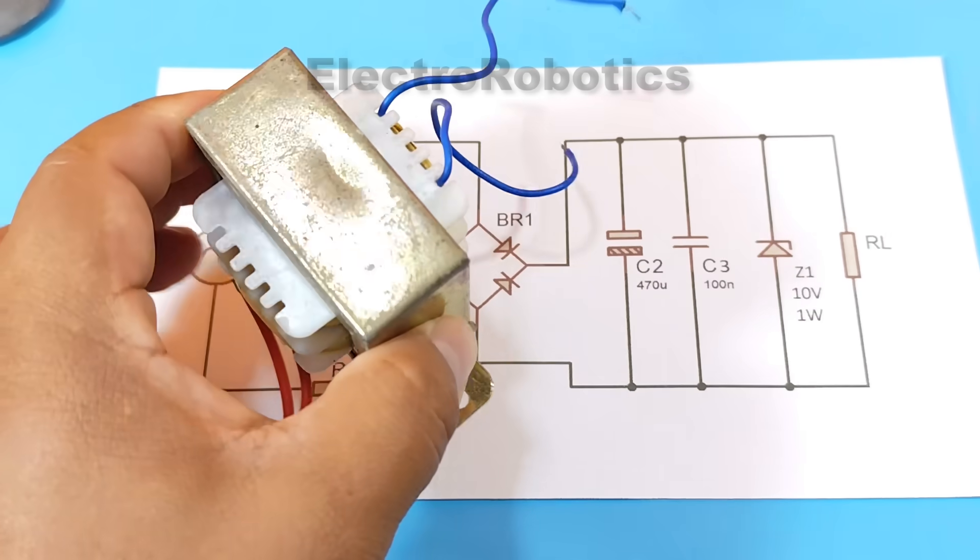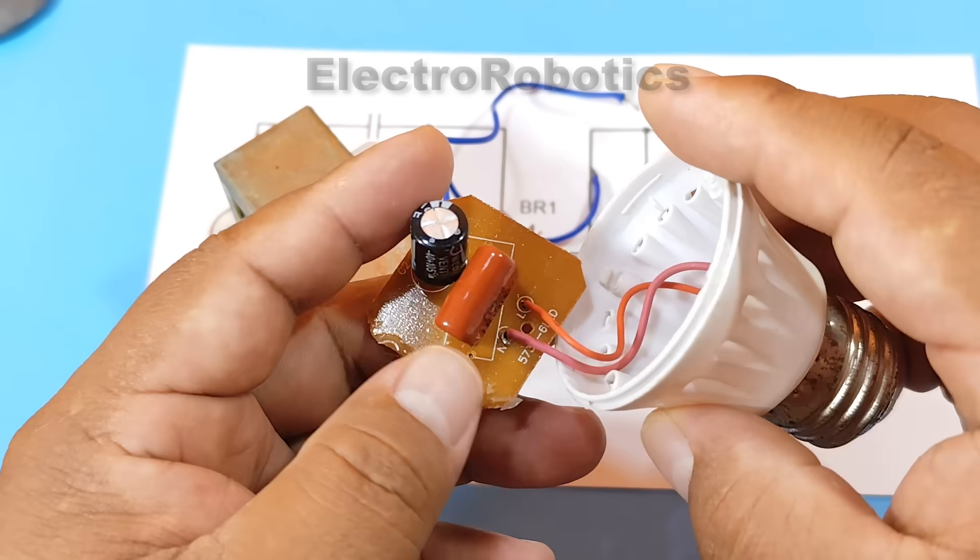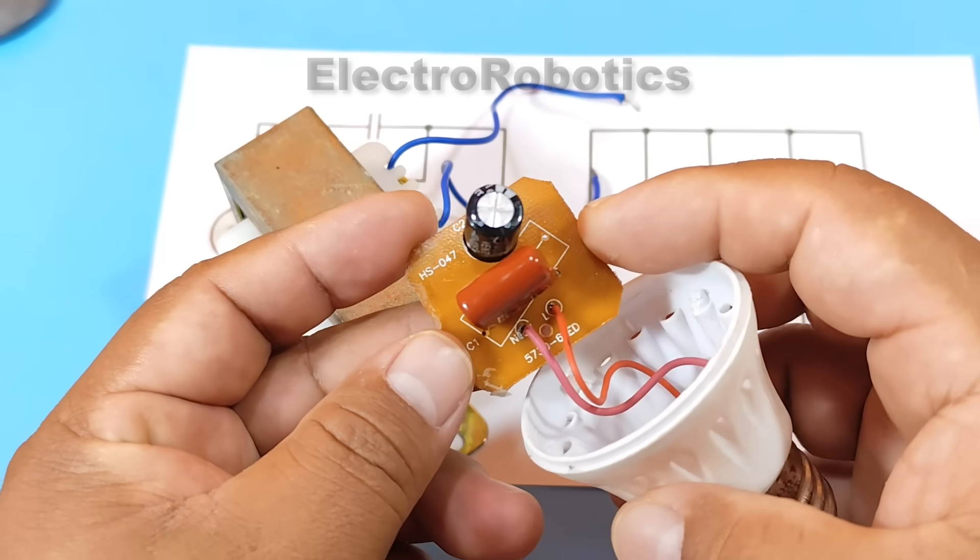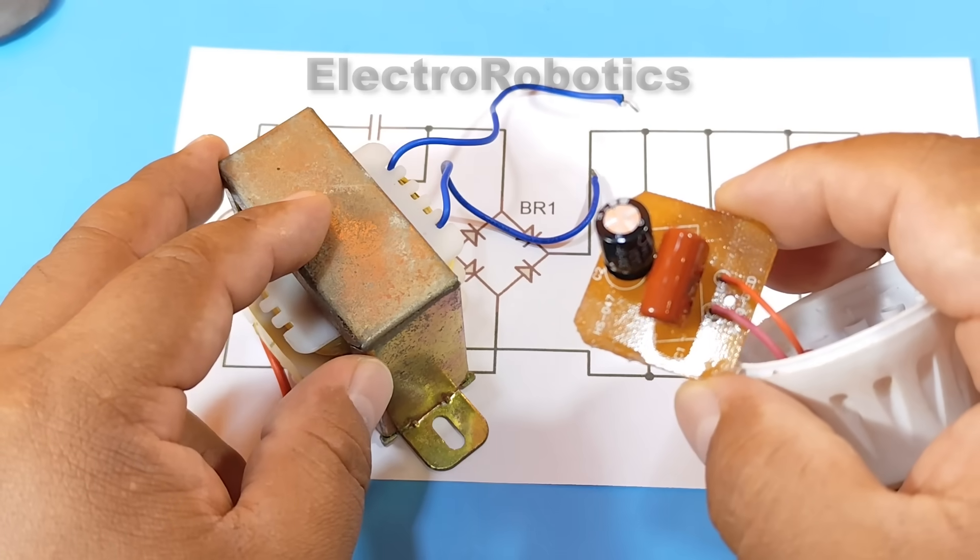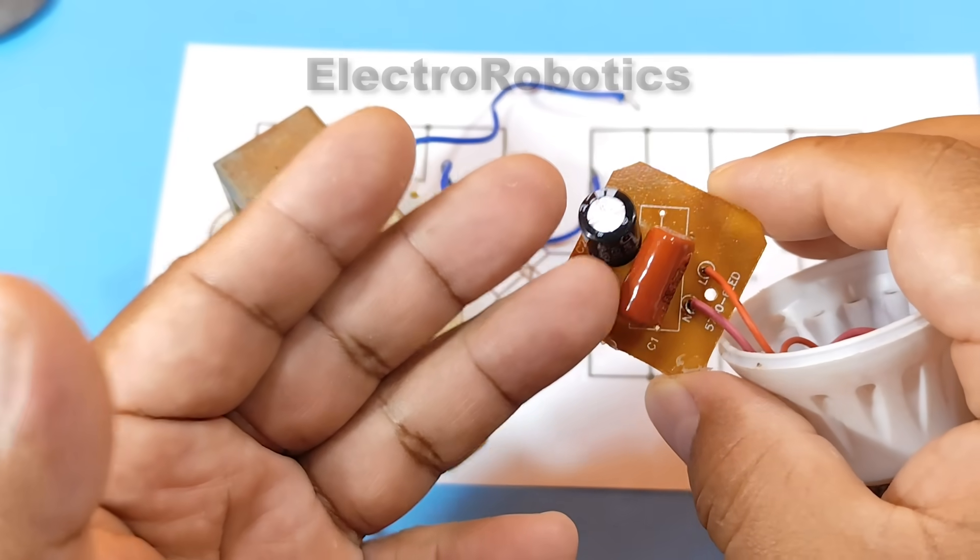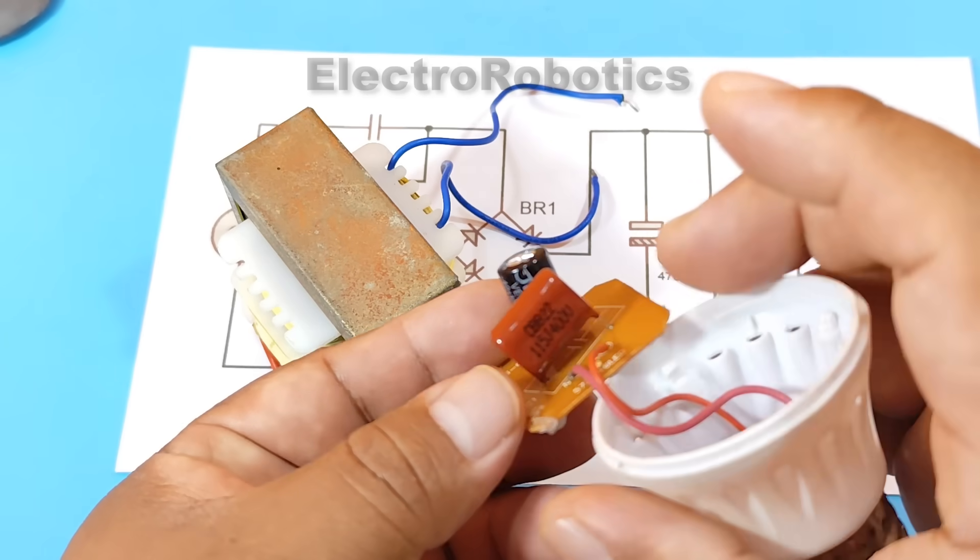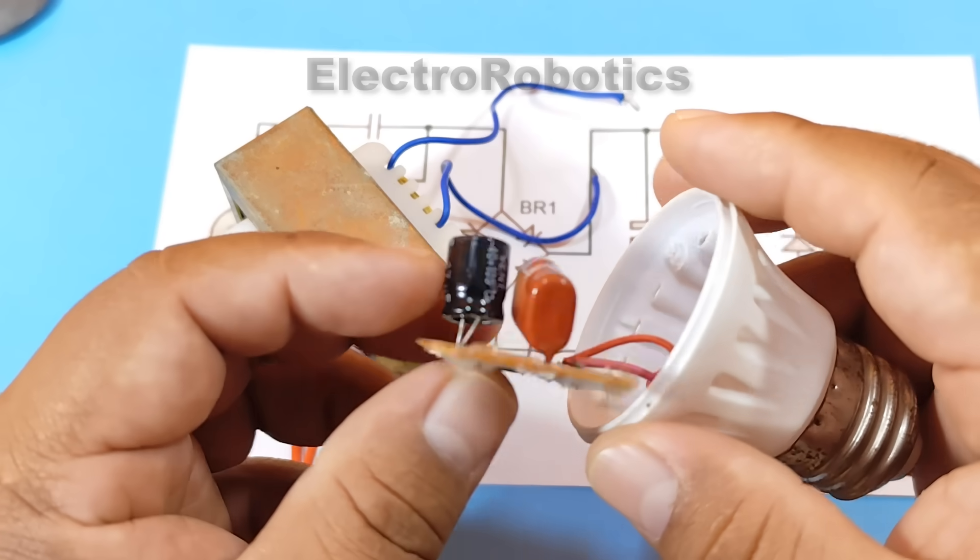For example, like this one here, it is a capacitive power supply that is much smaller than this transformer. However, you can use it to power an electronic board, such as this LED light.